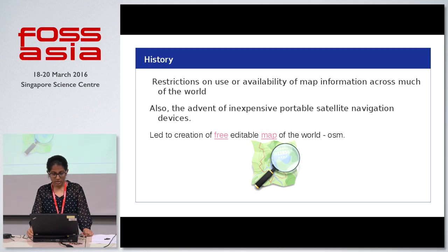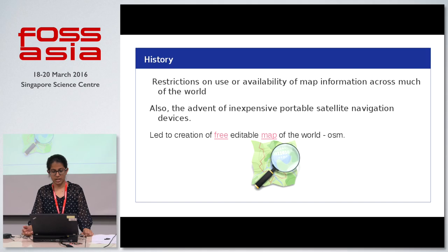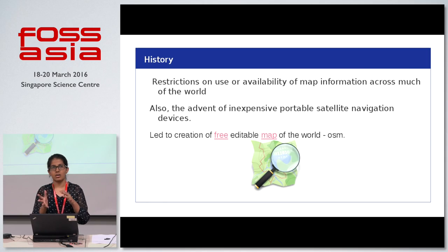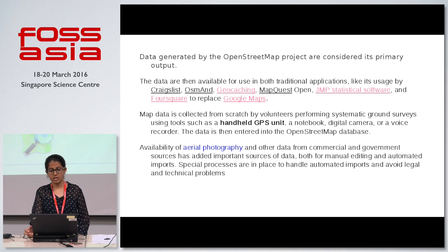Moving on to OpenStreetMap: there have been restrictions on use and availability of map information across the world, and because of cheap portable satellite navigation devices, there is not a lot of map information available globally. This led to the creation of a free, editable map of the world called OpenStreetMap.